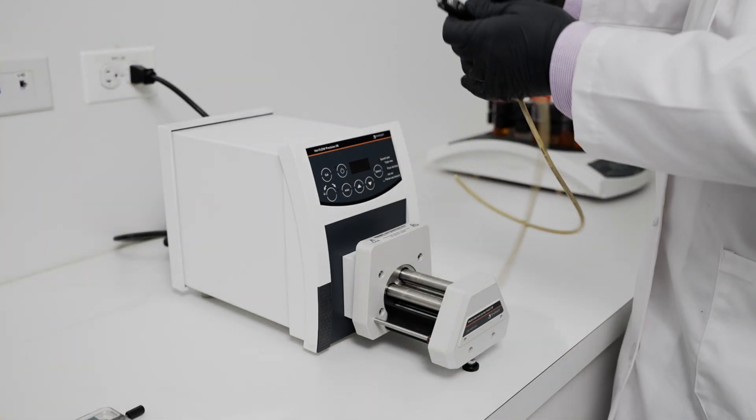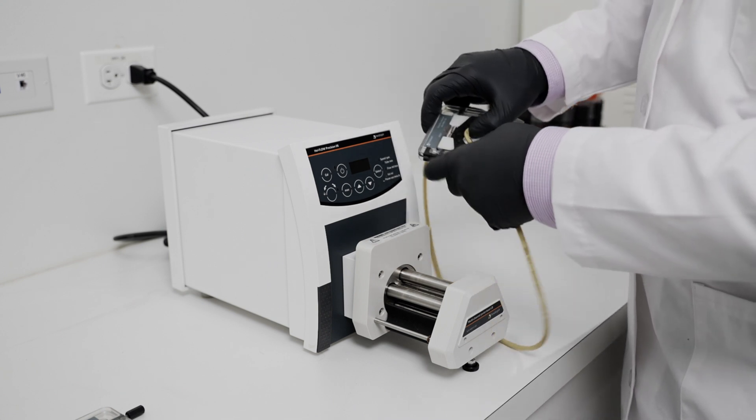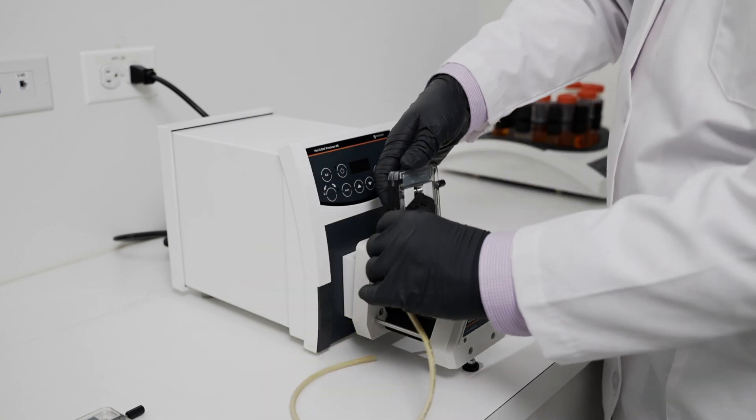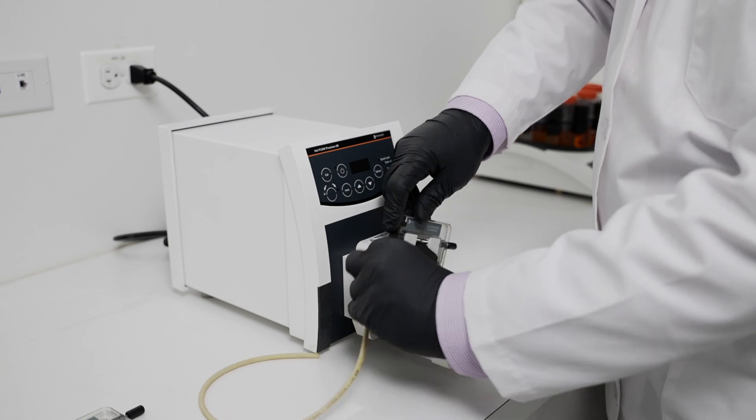We're going to insert our tubing into that cassette, and then attach the cassette one side at a time to the pump head.